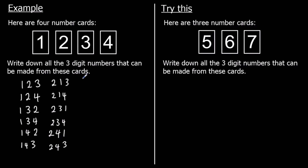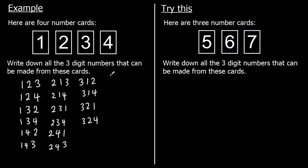Then I'll move on for three hundreds. With three hundred and one in the tens, we get three hundred and twelve or three hundred and fourteen. With two in the tens, I've got three hundred and twenty one and three hundred and twenty four. And with four in the tens, three hundred and forty one and three hundred and forty two.